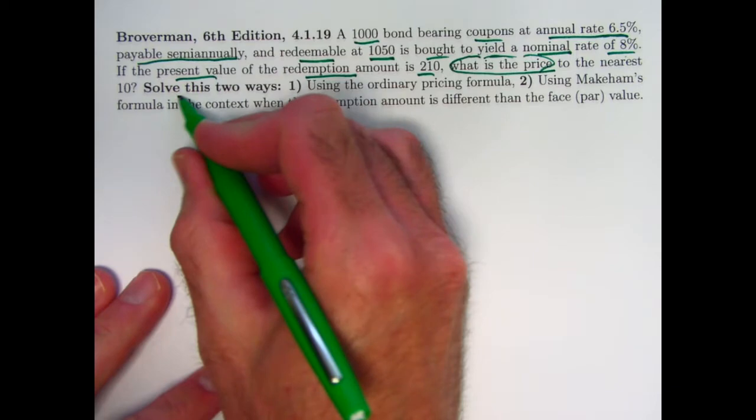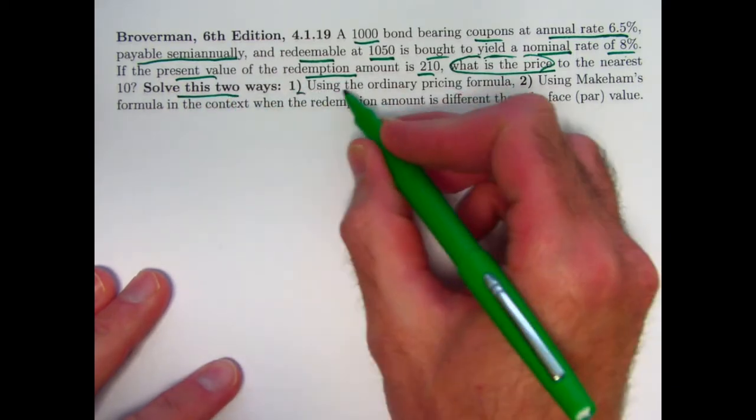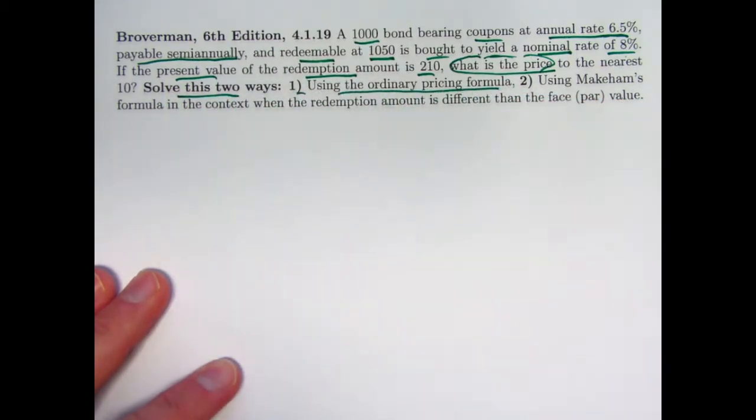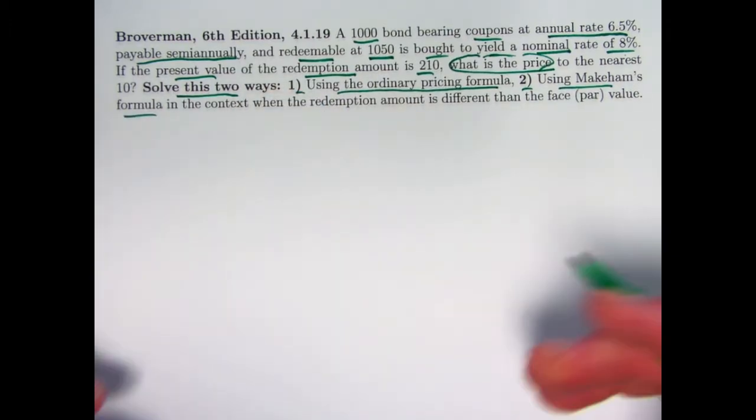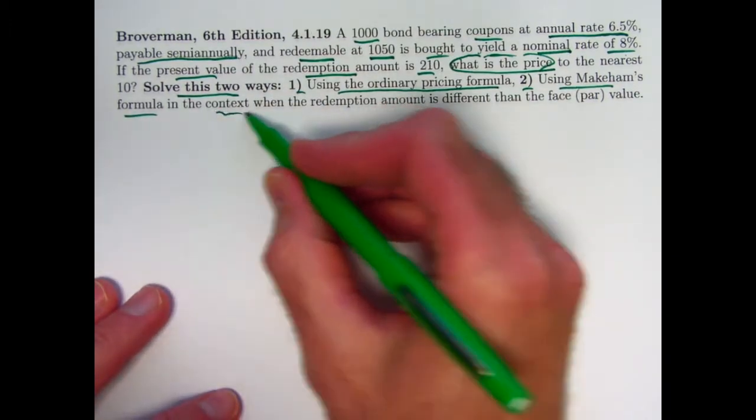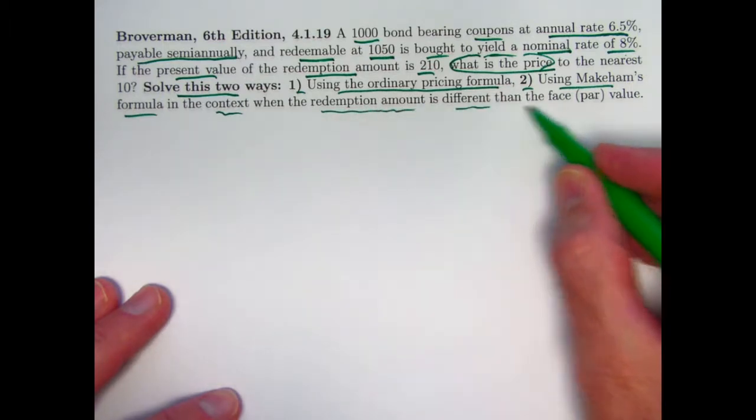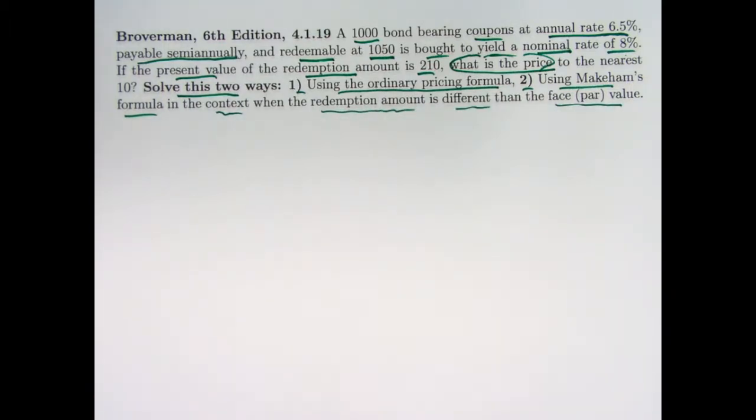I added some directions here. I want to solve this in two ways. First, using the ordinary pricing formula. We'll think about a timeline. Second, using Makeham's formula, which we used in the past couple videos, but this time when the redemption amount is different than the face or par value, and we're going to have this idea of a modified coupon rate.